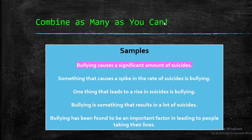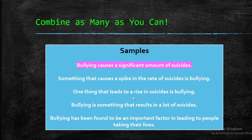My advice is to combine as many techniques as you can — two or three techniques together in a sentence. For example: 'something that causes a spike in the rate of suicide is bullying.' I've used rearranging and also a synonym-like phrase — 'spike in the rate of suicides.' Another version: 'one thing that leads to a rise in suicides is bullying' — instead of 'causes,' I wrote 'leads.' Thirdly: 'bullying is something that results in a lot of suicides' — instead of 'significant amount,' I wrote 'a lot of,' and 'results' instead of 'causes.'